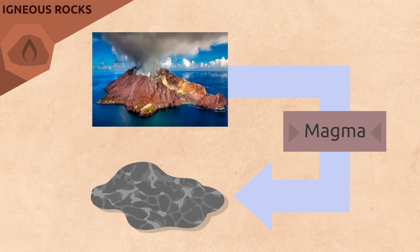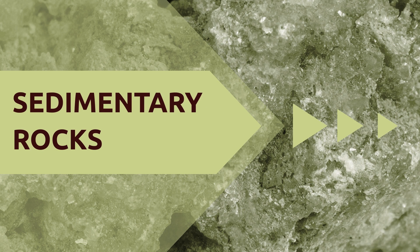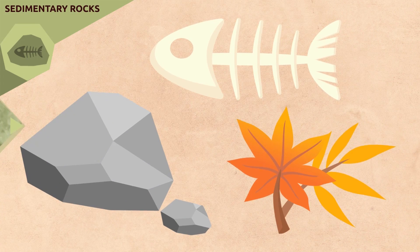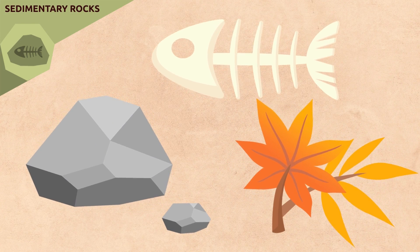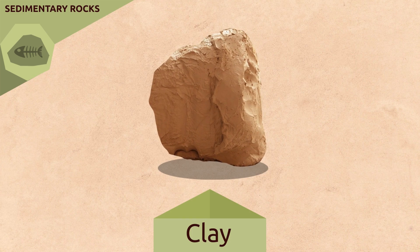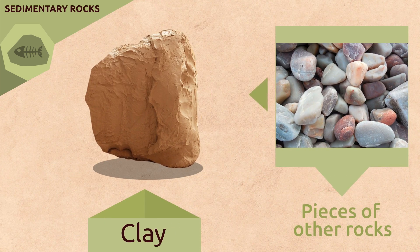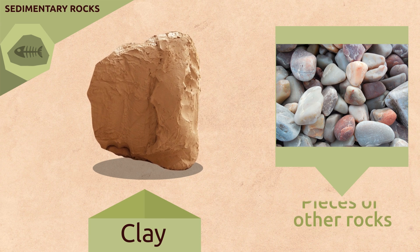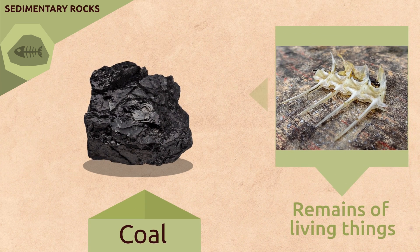Sedimentary rocks are formed from pieces of other rocks or even once-living organisms. Clay, for example, is formed by broken-up pieces of other rocks. Coal and petroleum are formed from the remains of living things like animals and plants.